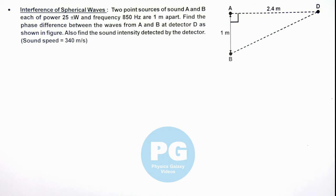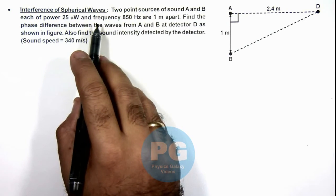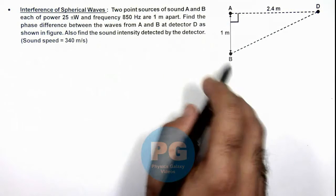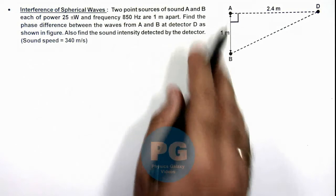In this illustration, we'll discuss the interference of spherical waves. We are given two point sources of sound A and B, each of power 25π watts and frequency 850 Hz, one meter apart.